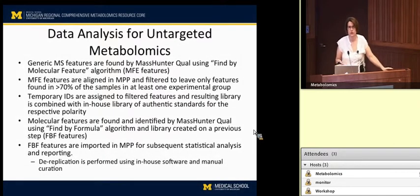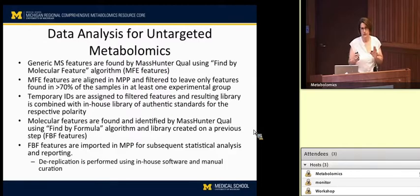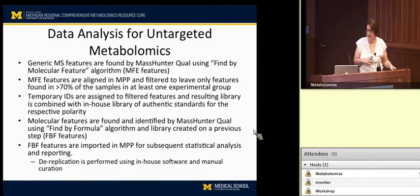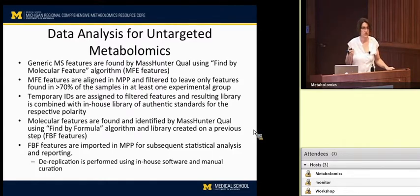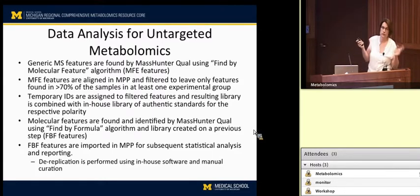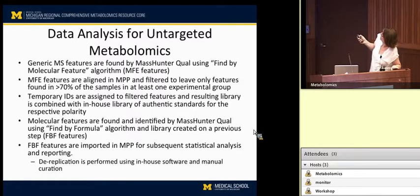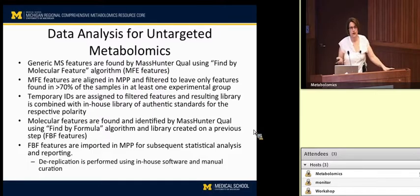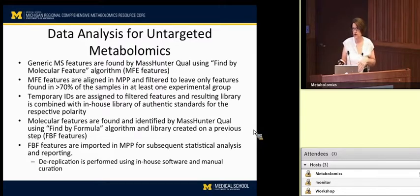At the same time we're doing alignment and recursion, the next step is to match those features against either the database of authentic standards we've run, or to try to assign a molecular formula to the features if we haven't run an authentic standard. The software can look at the isotope distribution and accurate mass of the compound and try to come up with a molecular formula.